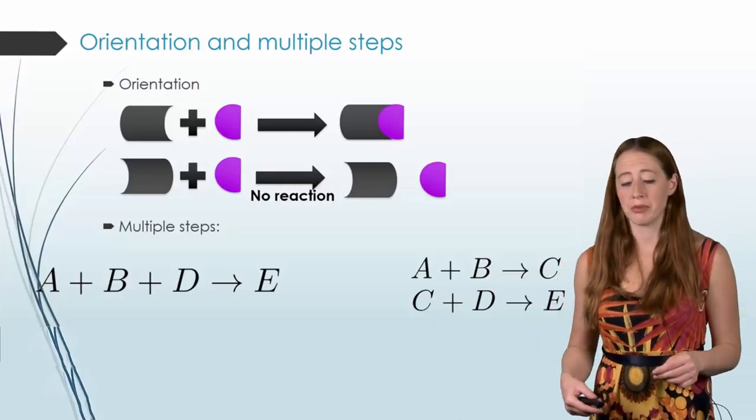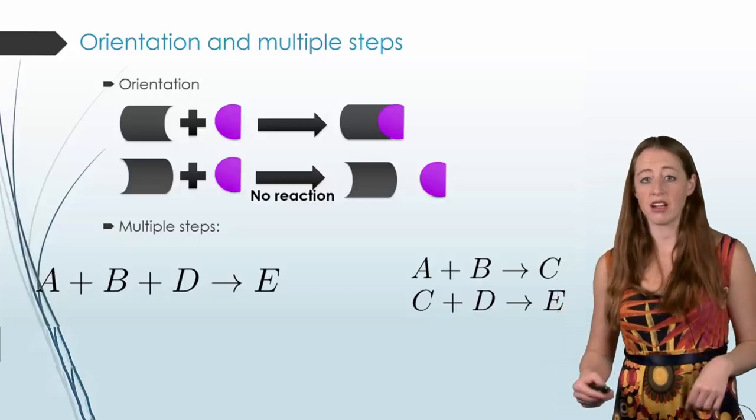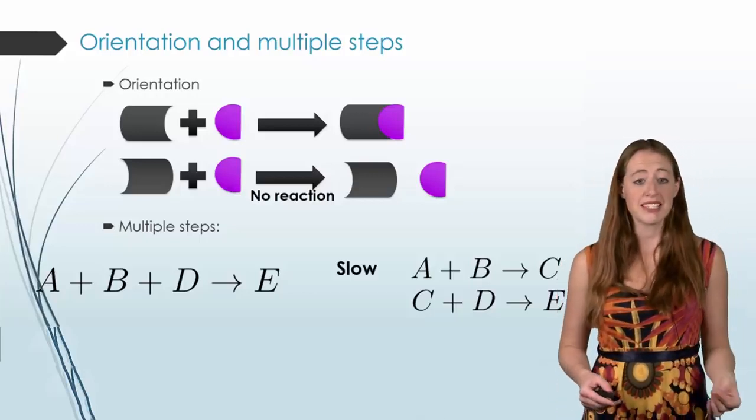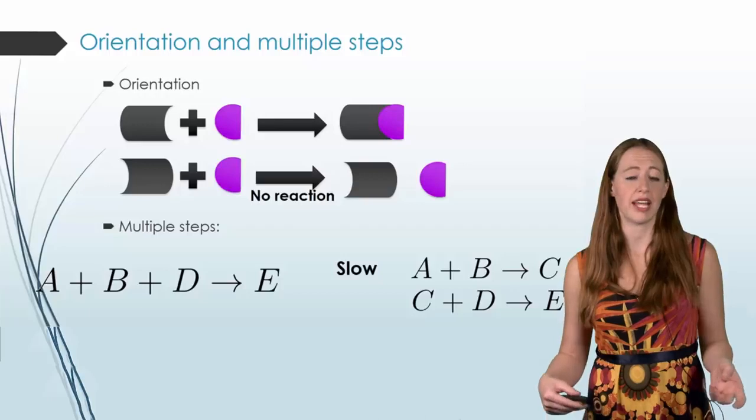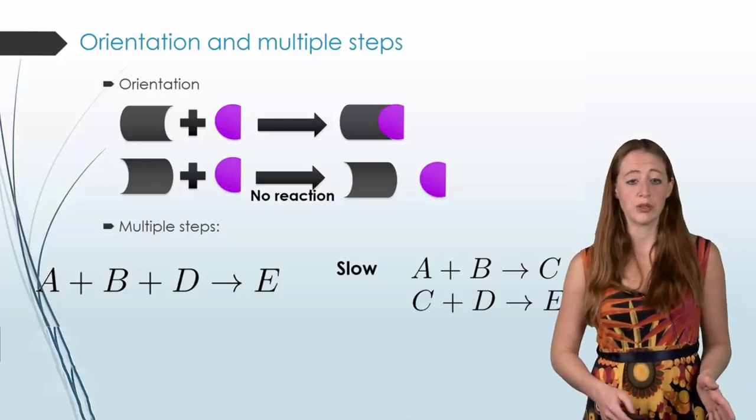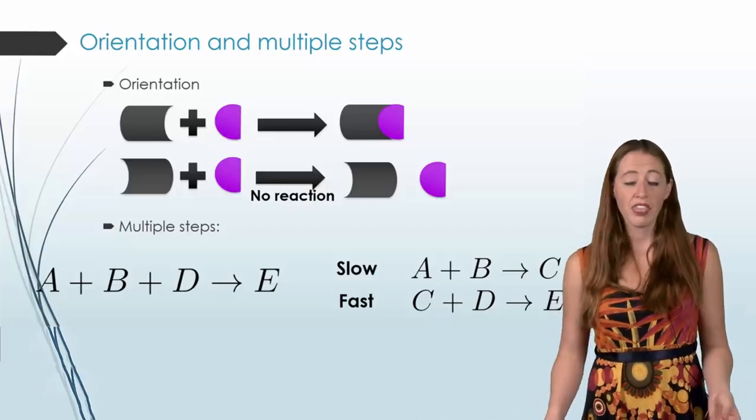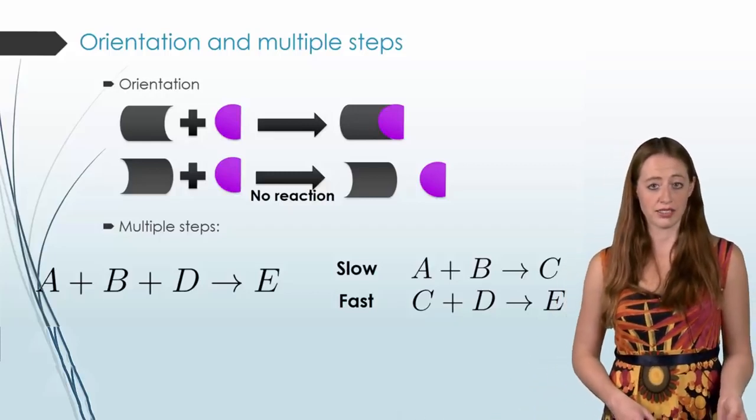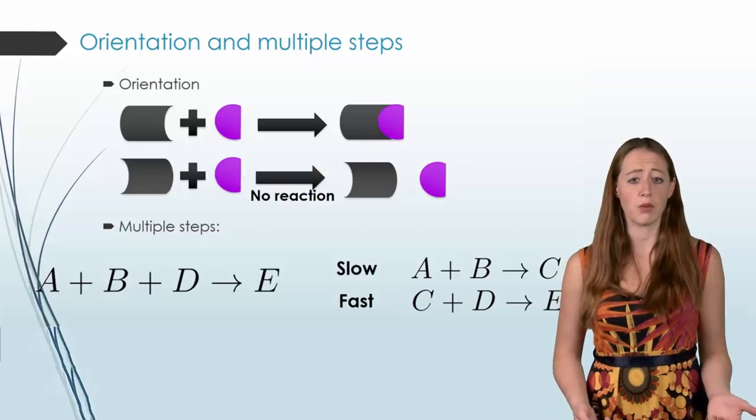When we're looking at these multiple stepped reactions, often times they aren't the same speed. Maybe step one is really, really slow. A and B just don't really want to react for whatever reason. But once they do, the second reaction is really fast. That's going to change how our rate law acts. And let's think about why.